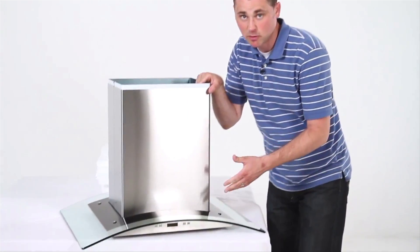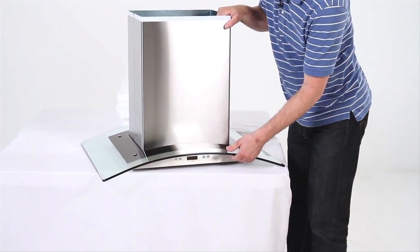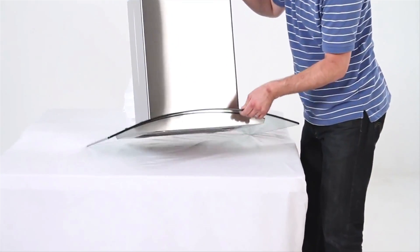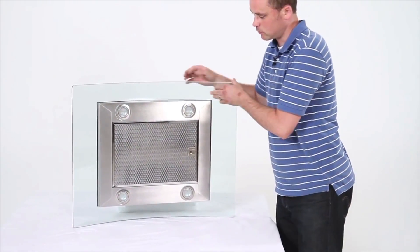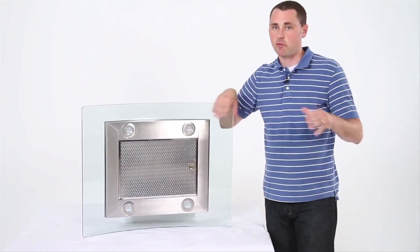So this range hood has a really beautiful design. It has this curved glass canopy that surrounds the stainless steel range hood itself, and it looks really beautiful hanging in a kitchen over an island.